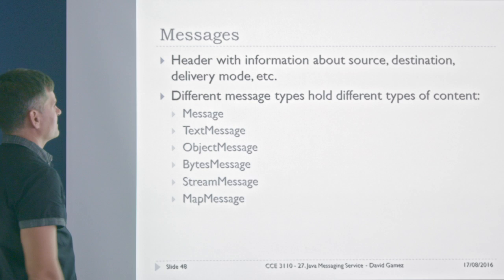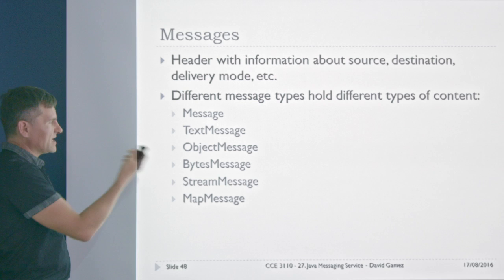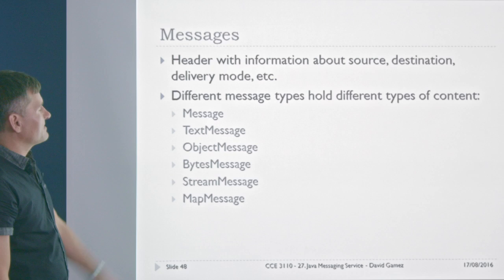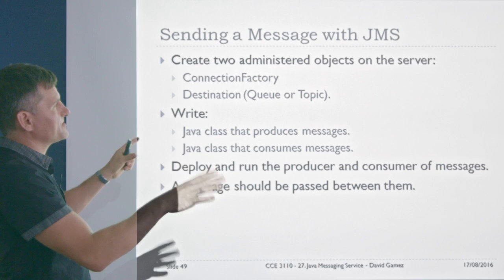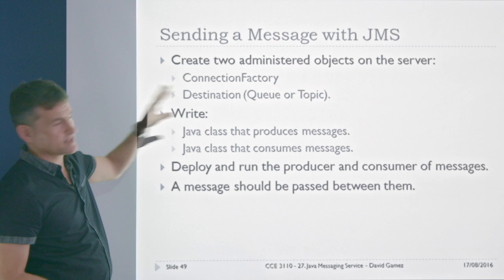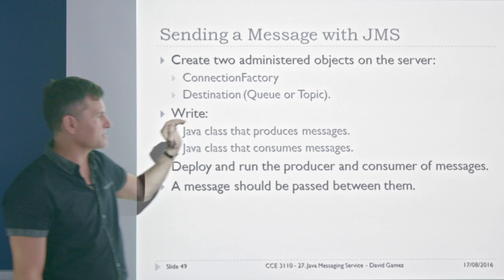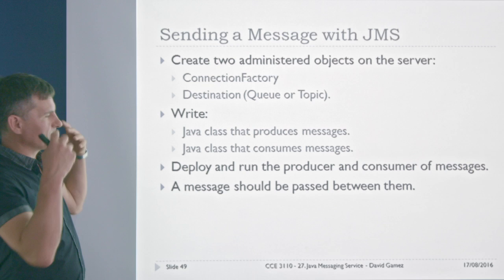Messages have a header and different types — you can send text, objects, straight bytes, streams, or a map (probably a hash map). To send a message with JMS, you create administered objects on the server like a connection factory and a destination (which can be a queue or a topic), then write a Java class that produces messages and one that consumes them, deploy and run them on the server, and the dependencies are injected automatically.